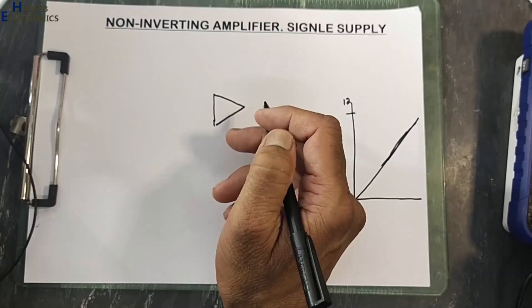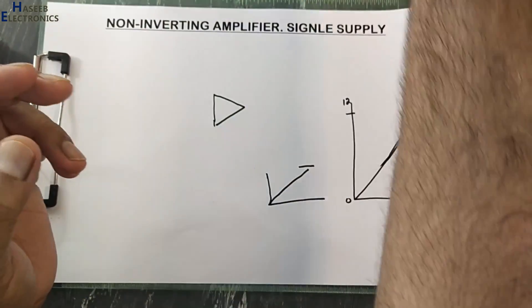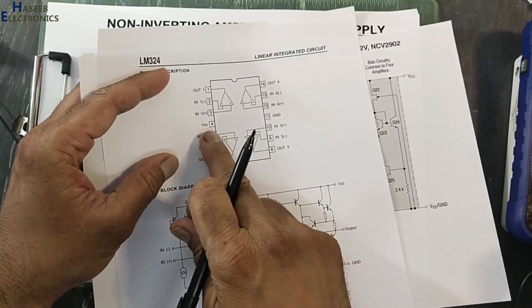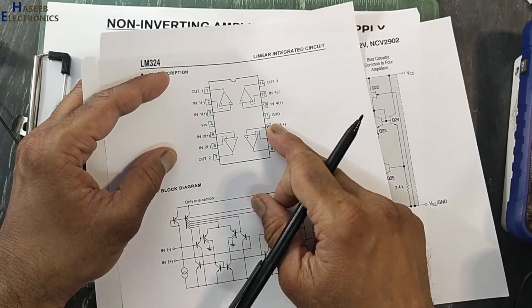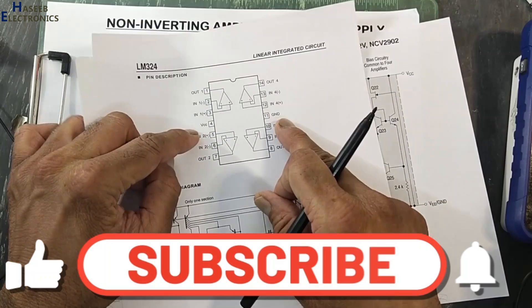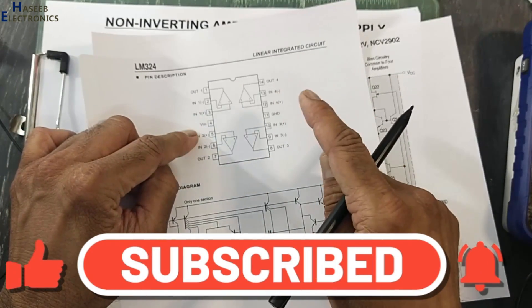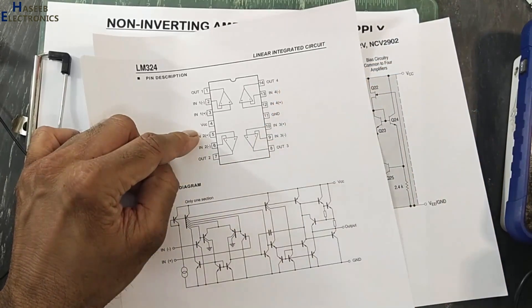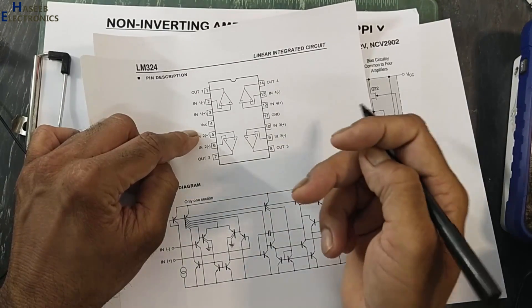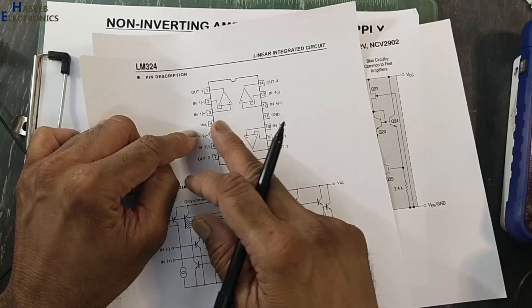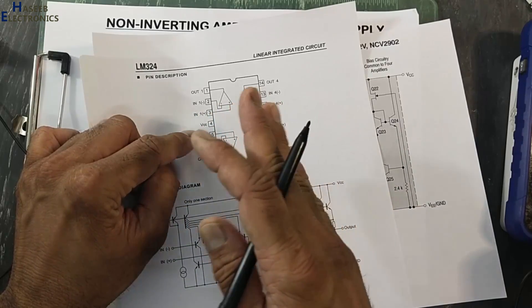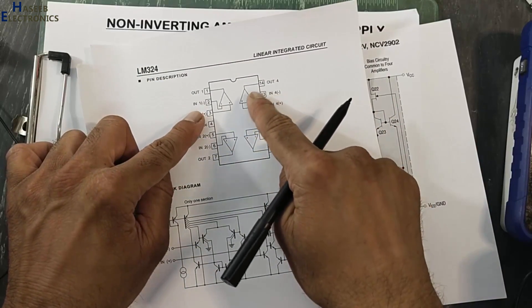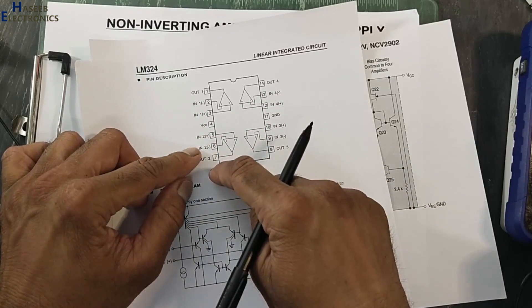We are using LM324. This is pin out of LM324 IC. Pin number 4 is VCC. Pin 11 is ground. That is in that condition when we are using single supply. Maximum 32 volt power supply can be applied. From lower voltage 3 volt to 32 volt. We can use any available power supply.